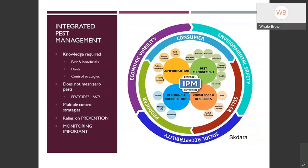IPM stands for integrated pest management and this is a broad way that you can manage insect pests, weed pests, rodent pests, or anything. You can apply it to essentially any type of environment, but you do need more knowledge — you need to know what insects in your landscape are going to be pests, which ones are beneficials, and which ones are just hanging out. You also need to know a little bit about the plants and the control strategies.